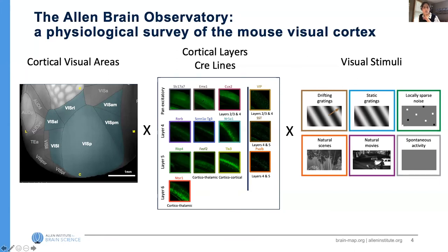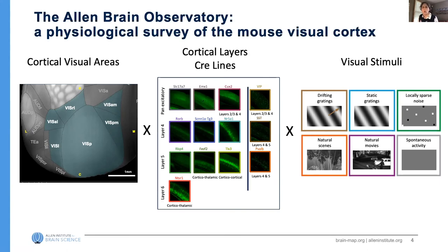We wanted to survey across different areas and different structures in the brain. This is an image of the surface of the mouse cortex — the primary visual cortex surrounded by other visual areas — and we collected data from about six different visual areas. We also collected data across a number of different cell types, using genetic tools available in the mouse to limit the expression of our calcium indicator to particular subtypes of cells, such as excitatory or inhibitory cells, so we could start to unravel different functions. We also used a wide range of different visual stimuli to look at how stimulus statistics might affect these computations.